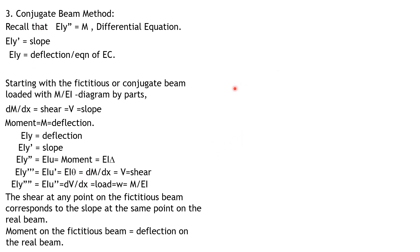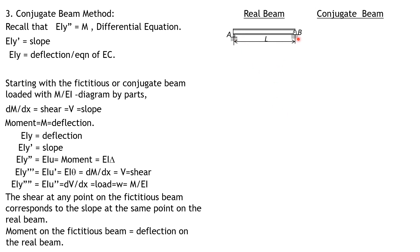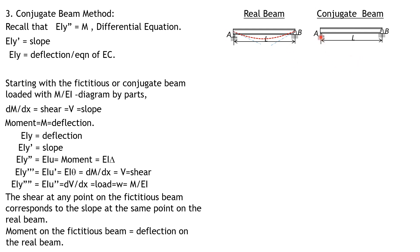To master the conjugate beam method, let's examine different cases for constructing the conjugate beam from the real beam. For a simply supported beam with end supports, the conjugate beam has the same shape because there is no moment and no deflection at the ends, so no moment is needed. There is rotation of the tangents at A and B, so there must be shear — therefore the conjugate beam has the same shape, size, and support conditions.